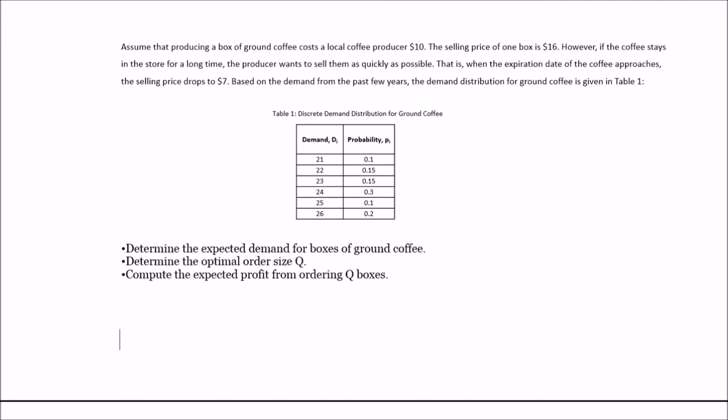Now let's go into the example problem for this news vendor application. We are operating a coffee shop where producing a box of ground coffee costs $10 and the selling price is $16 per box. As the expiration date approaches, we drop the selling price to $7 — this is the salvage value. Based on demand from the past few years, we know the demand distribution for ground coffee, given in Table 1.